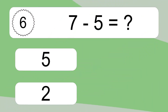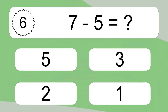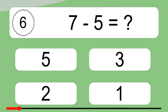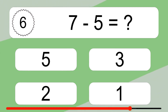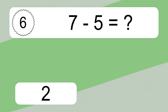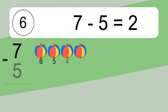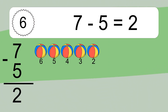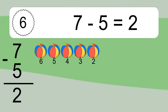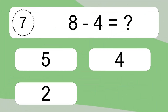7 minus 5 equals what? 7 minus 5 equals 2. Let's count it: 6, 5, 4, 3, 2.